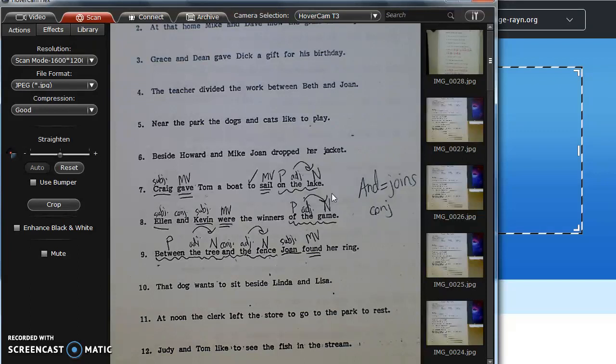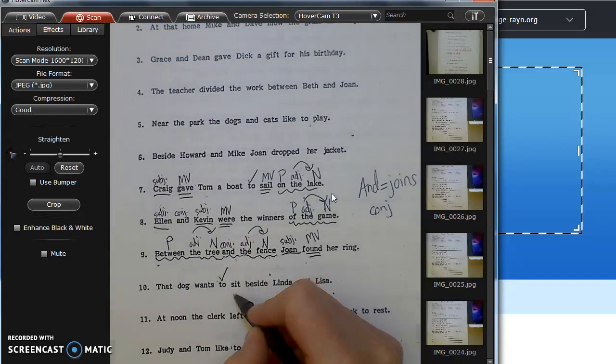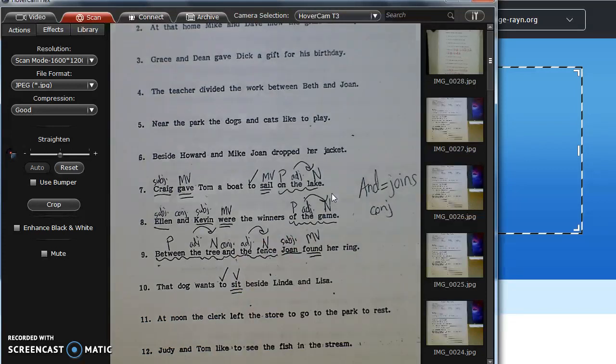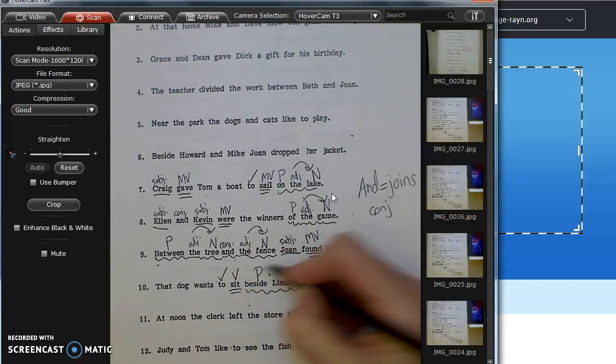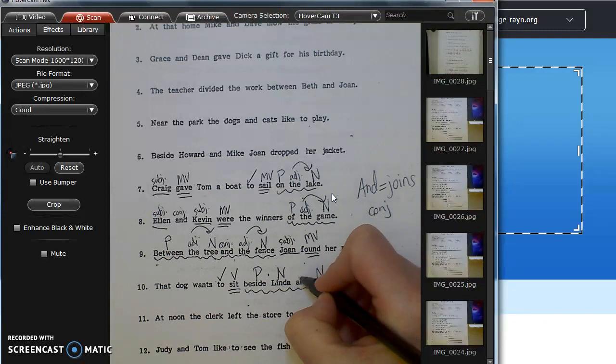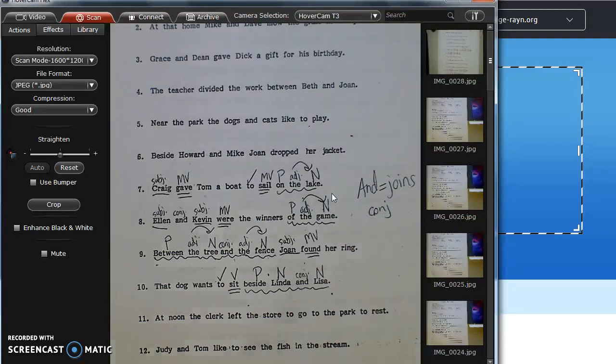Number ten. That dog wants to sit beside Linda and Lisa. So, I see a two. I'm going to check my two. Sit is a verb. Put a V above it. And my preposition is beside, and it says beside what? Linda, beside Lisa. I have a conjunction. So there's two objects of the preposition or two nouns. Squiggle it just a little bit. And, and is a conjunction. Okay, don't forget that and is a conjunction, not an adjective describing Lisa.